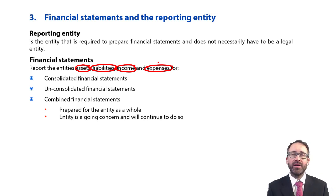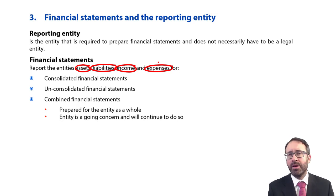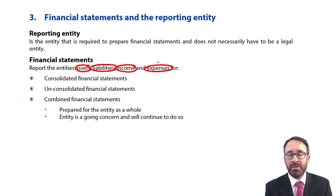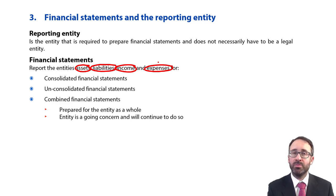What you need to think about, however, is how those assets, liabilities, income, and expenses are reported, and for what type of reporting entity they are prepared. Because within this syllabus, within financial reporting, you'll see it referred to the individual company accounts — preparing a statement of financial position, statement of profit or loss, statement of changes in equity from a trial balance. But as we get to the end of the syllabus, you'll also see us talk about your group statements of financial position and your group statements of profit or loss.